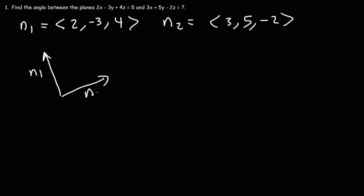To find the angle between two vectors, we could use this formula. Cosine theta is equal to the dot product of N1 and N2 divided by the magnitude of the two vectors.